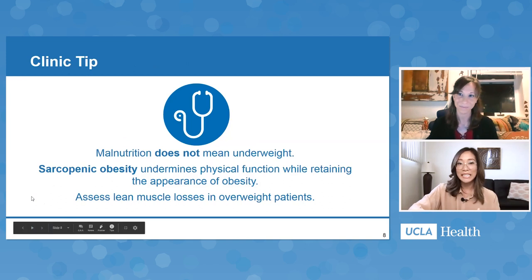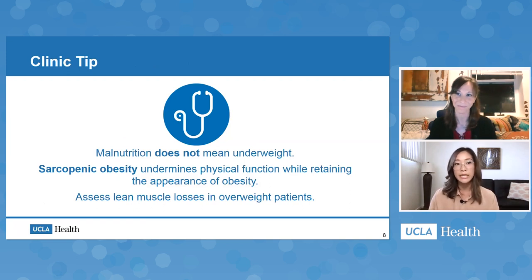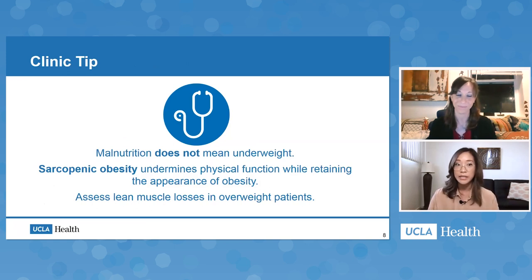Our first clinic tip: malnutrition does not mean that a person is underweight. It's really important to note that sarcopenia occurs in overweight and obese patients and it really does undermine their physical function while retaining that appearance of obesity. This makes sarcopenia difficult to detect in the growing population of overweight and obese cancer patients, but it's especially important to assess lean muscle mass in overweight patients who are often overlooked as having malnutrition.